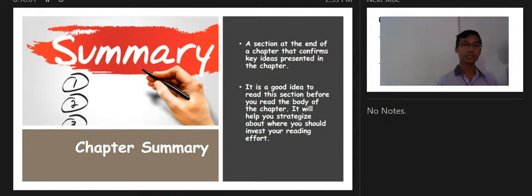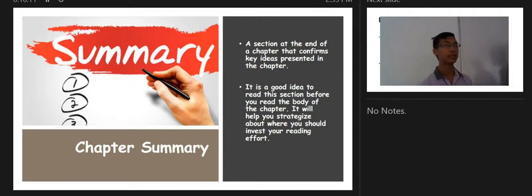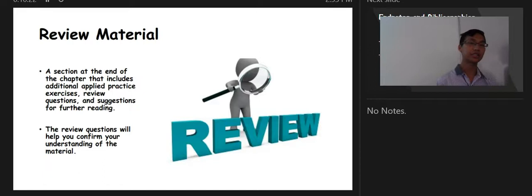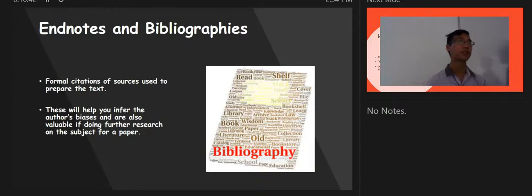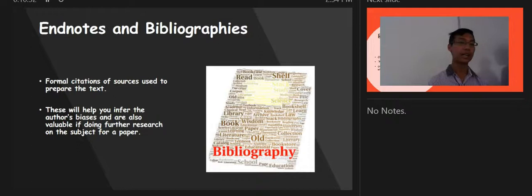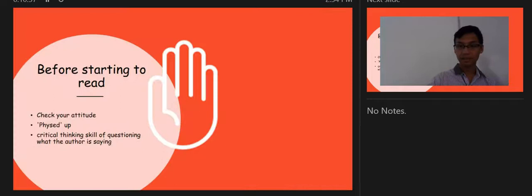The chapter summary is the section at the end of a chapter that confirms the key ideas presented. It is a good section to read before reading the body of the chapter because it helps you strategize about where to invest your reading effort. Review material at the end of the chapter includes additional applied practice exercises, review questions, and suggestions for further reading — the review questions help confirm your understanding. End notes and bibliography are the formal citations of sources used to prepare the text.